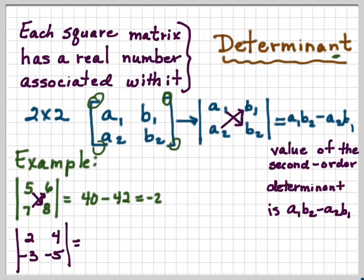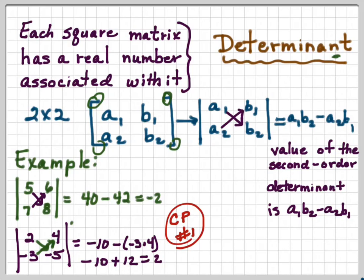Let's try another. 2, 4, negative 3, negative 5. If I multiply the 2 times the negative 5, I get negative 10. And the negative 3 times 4, I get negative 12. And negative 10 minus negative 12 is negative 10 plus 12, and that gives me 2. So go ahead and give your first checkpoint a try.